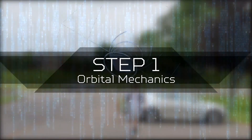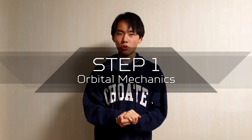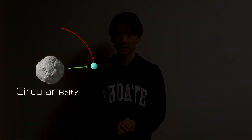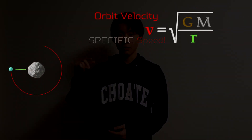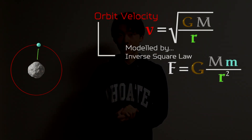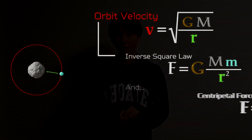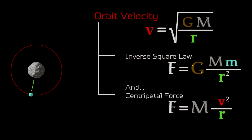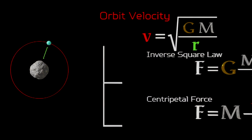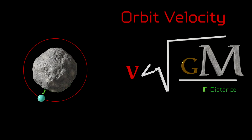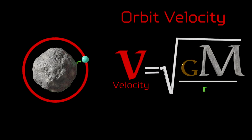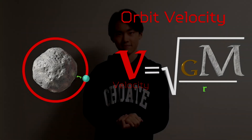Step 1: Orbital Mechanics. For a particle to form a circular belt, it must have a specific speed, modeled by Newton's inverse-squared law of gravity and the centripetal force. To orbit, the greater the asteroid's mass and the shorter the distance, the faster the particle should be.